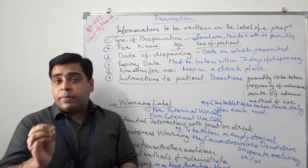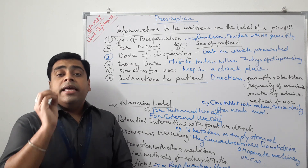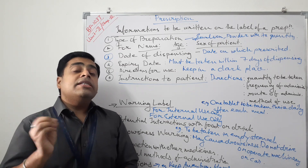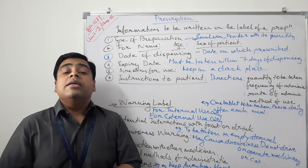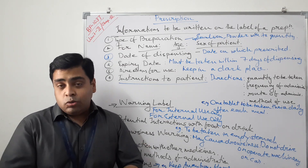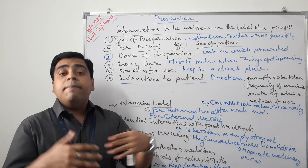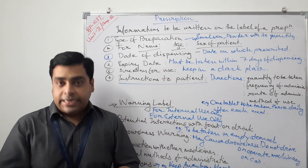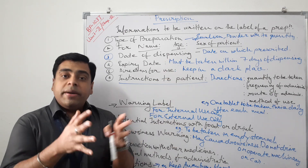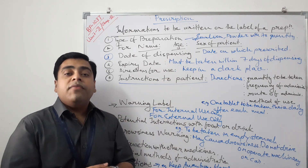Next — date of dispensing. This is important: when was that product prepared? And now, manufacturing date — that is when the medicine is manufactured.